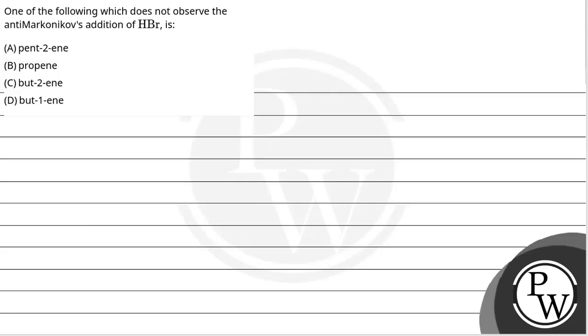Let's read the question. The question says one of the following which does not observe the anti-Markovnikov addition of HBr. Now the key concept related to this question is Markovnikov's and Anti-Markovnikov's addition.